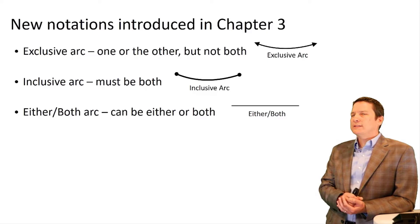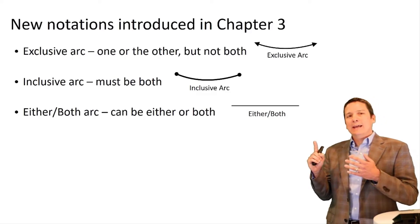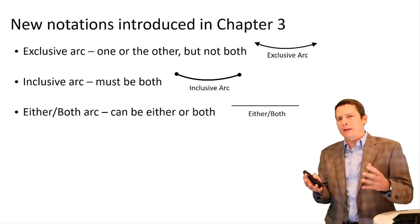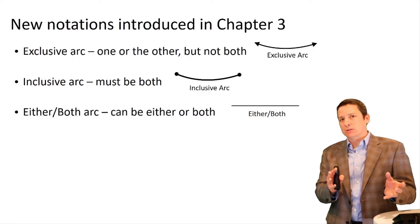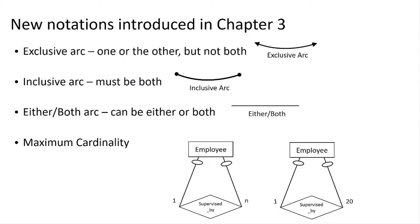We also looked at the arc, which captures whether an entity participating in more than one relationship must participate in either one or the other but not both — that's the exclusive arc — or must participate in both if participating in either — that's the inclusive arc. A straight line says it must participate in one, the other, or both, but cannot avoid participating in any relationship. We're also introducing maximum cardinality, where an entity participates not just a maximum of many times, but a maximum of some specific number of times.